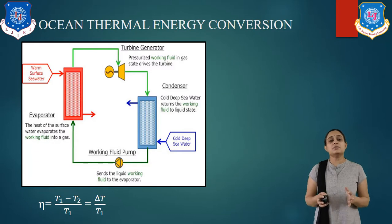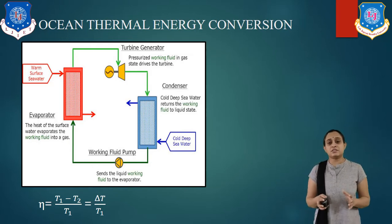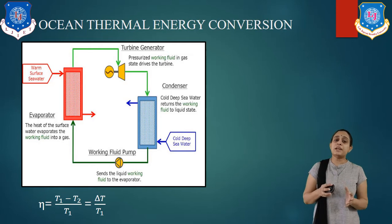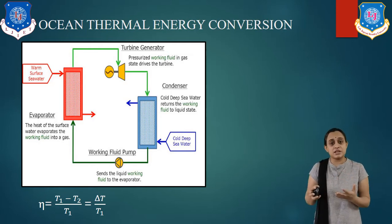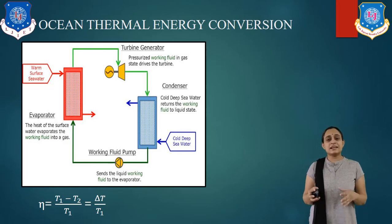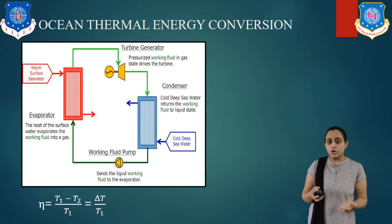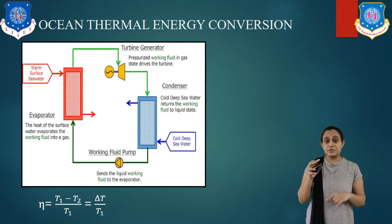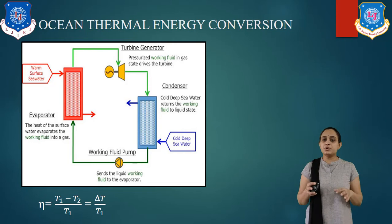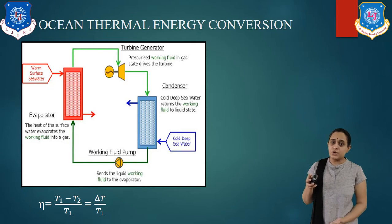Let us understand the ocean thermal energy conversion system. Ocean thermal energy conversion is a way to generate electricity using the temperature difference of sea water at different levels. The principle of OTEC: sea water gets heated naturally in the top layer due to solar radiation, while water remains at a cooler temperature at the lower level. The OTEC system utilizes this temperature difference between water at the surface and at the lower level of the ocean.